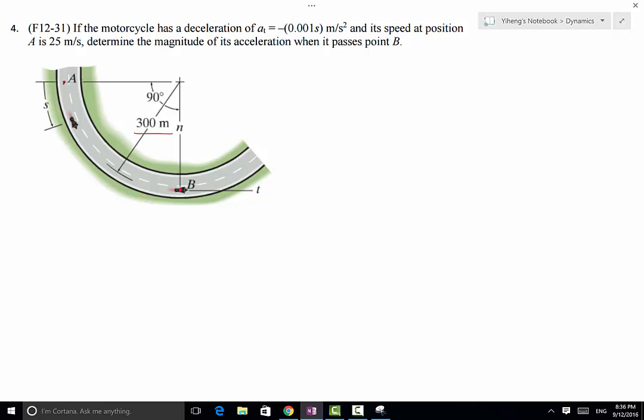And its tangential acceleration is given as a function of s, the displacement from point A along this curved path. And its speed at point A is 25 meters per second. We need to determine the magnitude of its acceleration when it has passed point B.